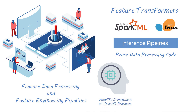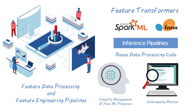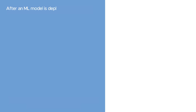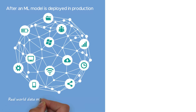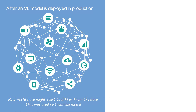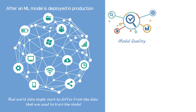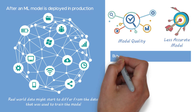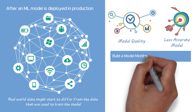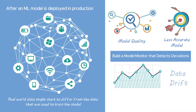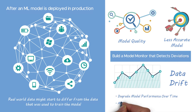After deployment, continuously monitor the models. After an ML model is deployed into production, the real-world data might start to differ from the data that was used to train the model, leading to deviations in model quality and eventually less accurate models. Build a model monitor that detects deviations such as data drift, which can degrade model performance over time, and alerts you to take remedial actions.